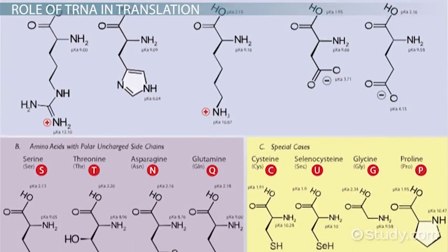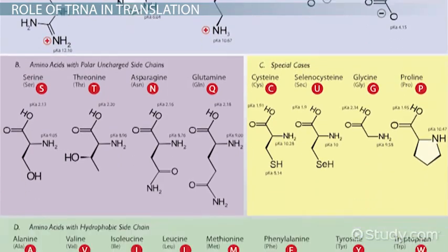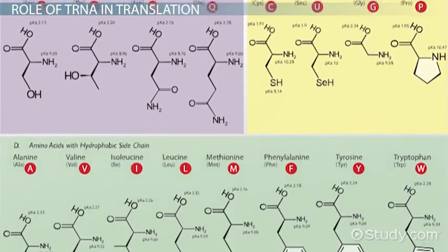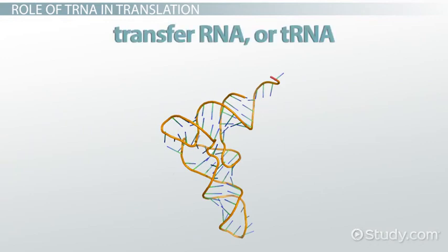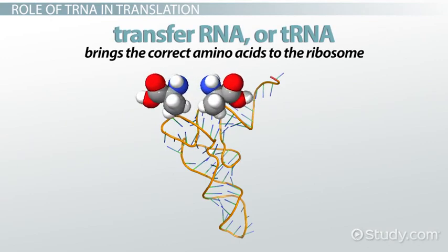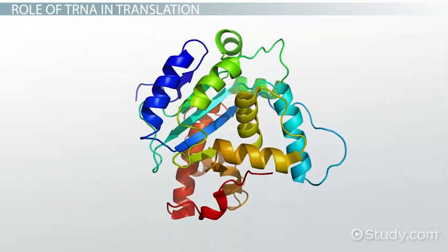There are 20 different types of amino acids, and each protein needs specific ones arranged in a specific order. A molecule called transfer RNA, or tRNA, brings the correct amino acids to the ribosome, which then assembles the amino acids into a final protein.